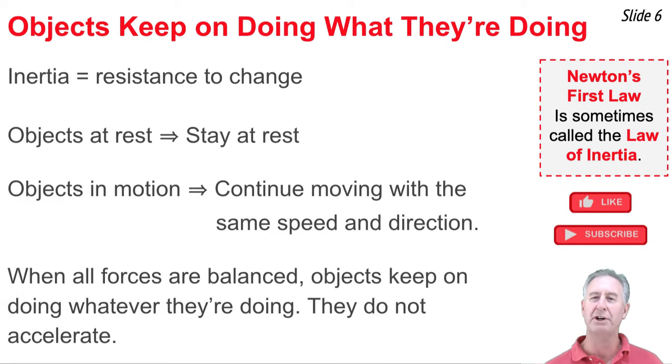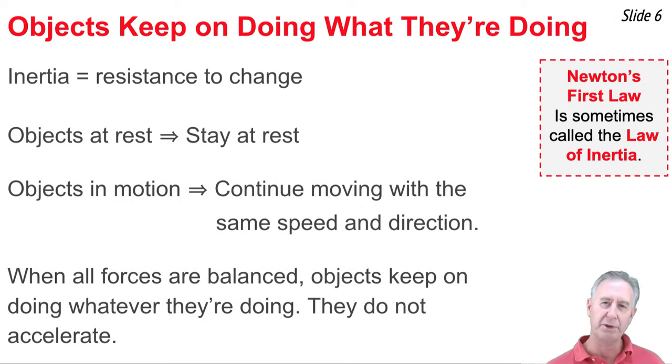The idea is that objects that are at rest tend to stay at rest. They resist the change from this at rest state. And objects that are moving at two meters per second to the right want to keep moving at two meters per second to the right and resist a change in this constant velocity state of motion. When all the individual forces that act upon an object are balanced, objects keep on doing what they're doing. They have inertia, a resistance to a change in the state of motion. They just simply don't want to accelerate.